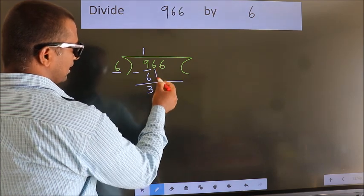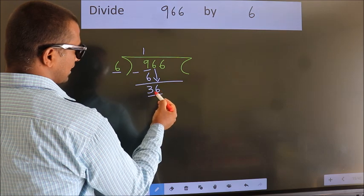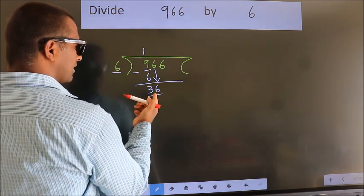After this, bring down the beside number. So, 6 down. 36. When do we get 36?